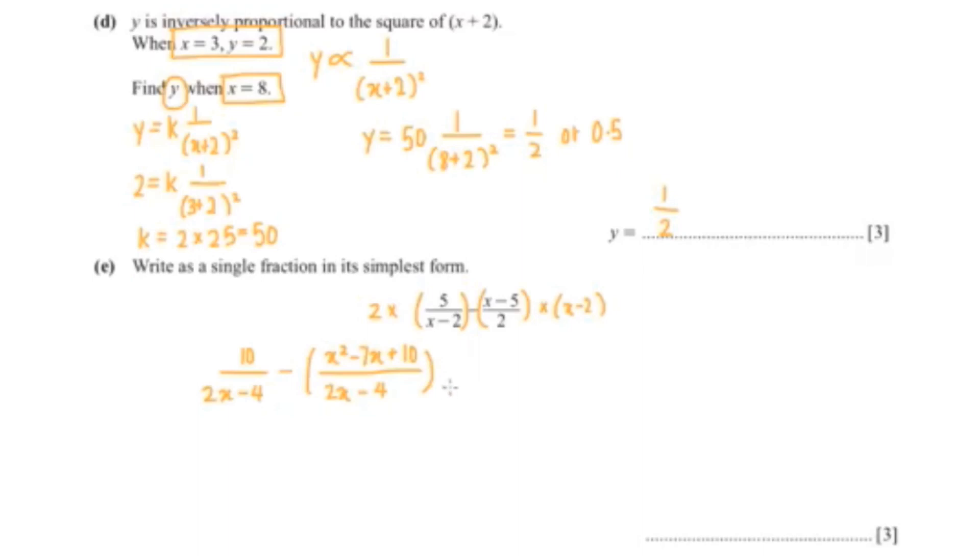Now I'm going to expand the bracket, and that would be 10 over 2x minus 4, minus x squared plus 7x minus 10. So 10 minus 10 is 0, so we'll be left with negative x squared plus 7x over 2x minus 4. And that is our answer.